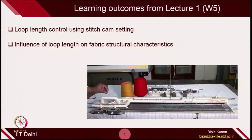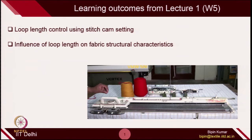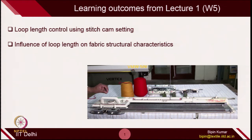Now we move to this particular lecture. I have taken a very simple topic: when you change the loop length with the help of stitch cam setting, how the fabric structure will behave and look, and what changes you will expect when you change the loop length. I will first introduce you to how you can control the loop length on the machine — this is the single bed machine from week number 2 — and then how that loop length controls the fabric structure.